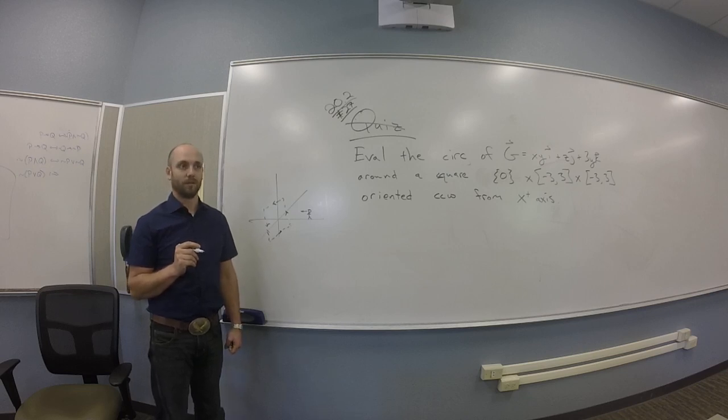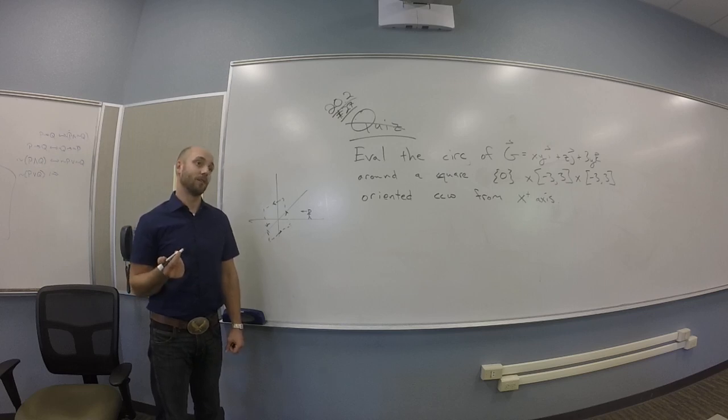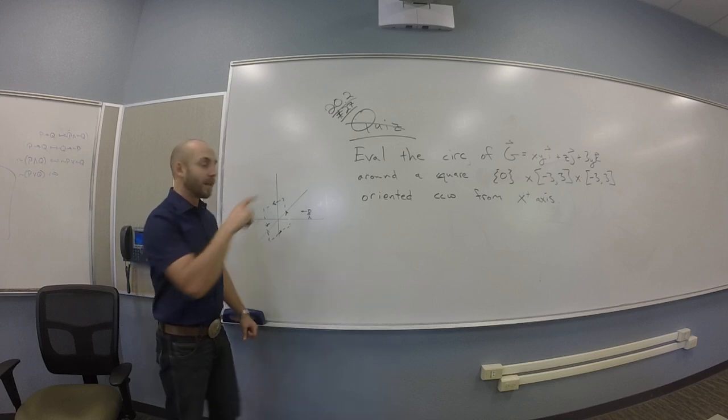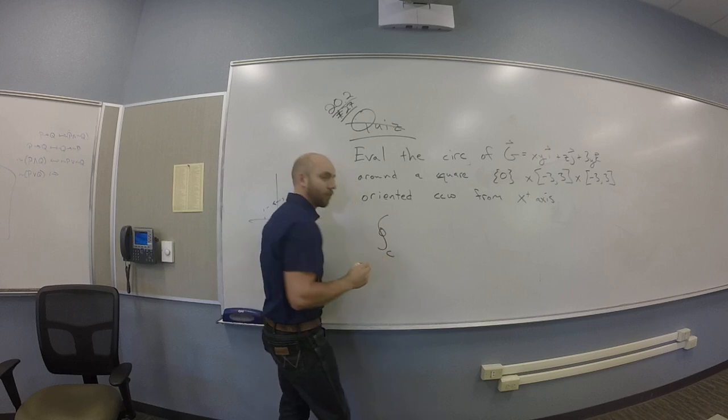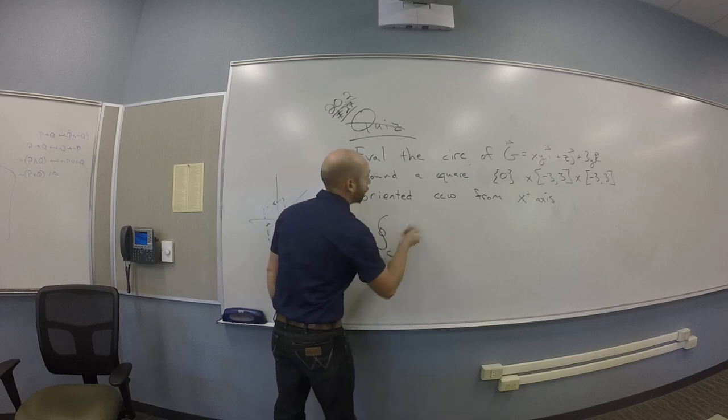How can I do this? Yeah, you could do four line integrals, right? You guys see that's really what I'm being asked. The circulation is just the closed integral around the curve of your vector field.